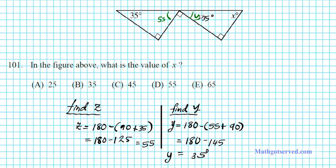Now, what you notice is that based on the angle-angle similarity postulate, if two angles of two distinct triangles are congruent, then those two triangles are similar. This automatically means corresponding angles are congruent. So based on the AA similarity postulate, angle x has to be equal to its corresponding angle, which is 55 degrees.